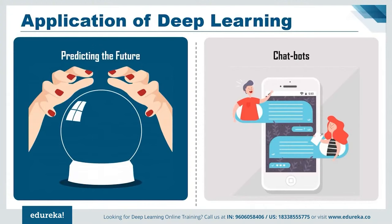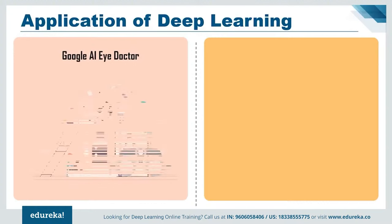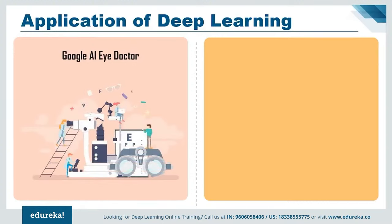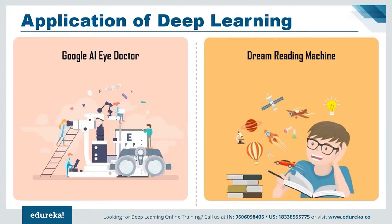There is a very cool application of deep learning called the Google AI Eye Doctor. It is a recent initiative taken by Google where they are working with an Indian eye care chain to develop AI software which can examine retina scans and identify a condition called diabetic retinopathy, which can cause blindness. Another fascinating application is a dream reading machine — a machine that can capture your dreams in the form of video. This was tried in Japan a few years back on 3 test subjects, and they were able to achieve close to 60% accuracy, which is quite unbelievable, yet true.